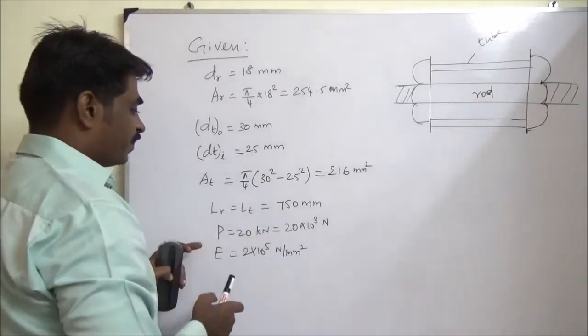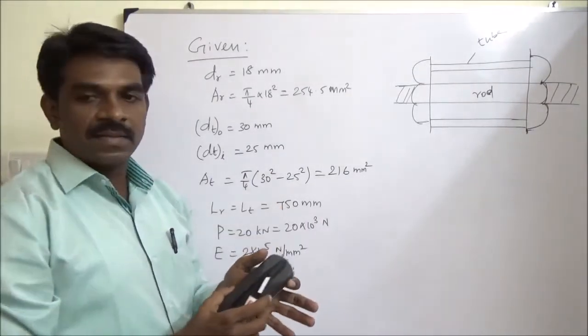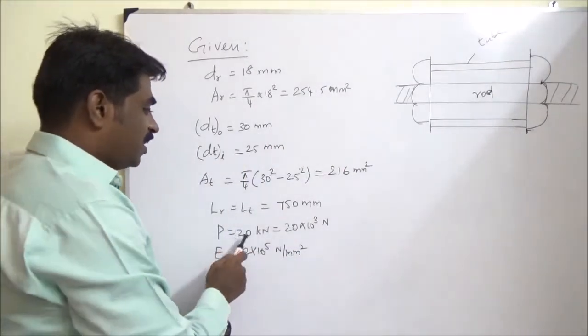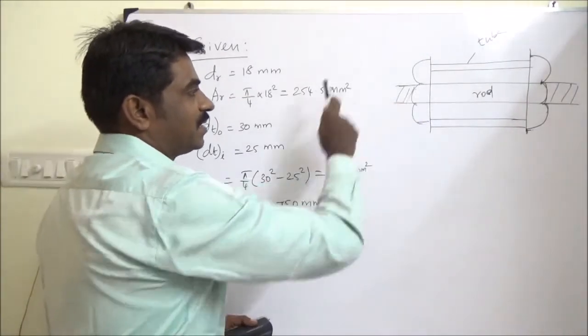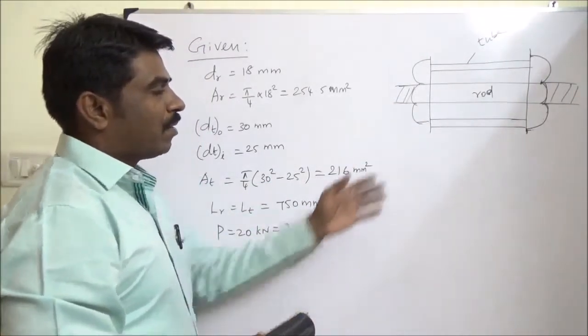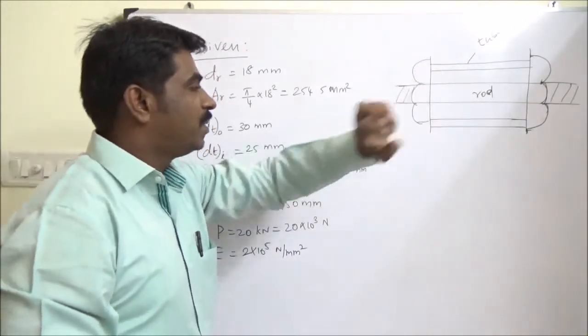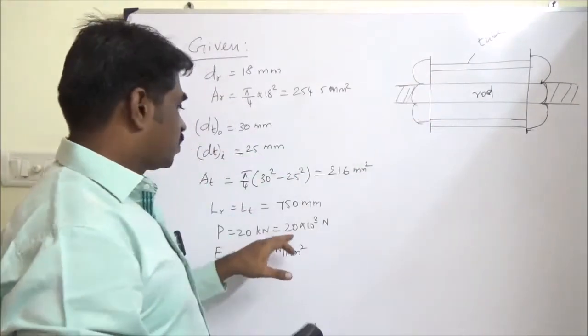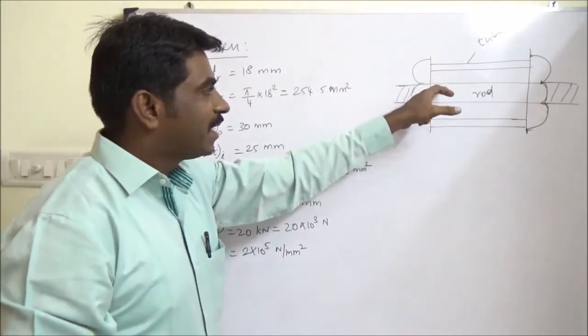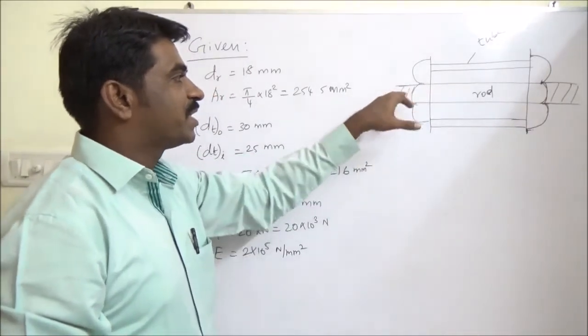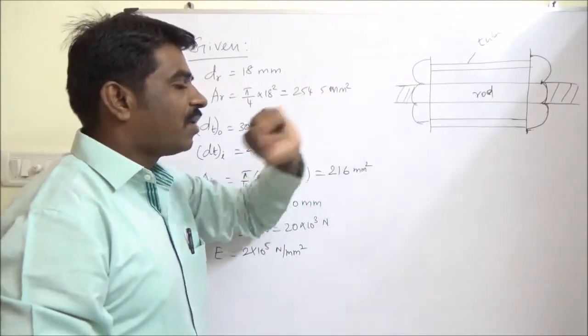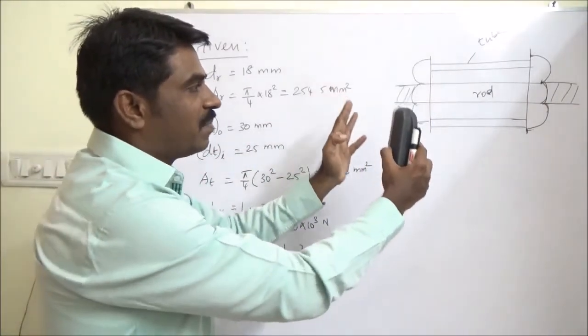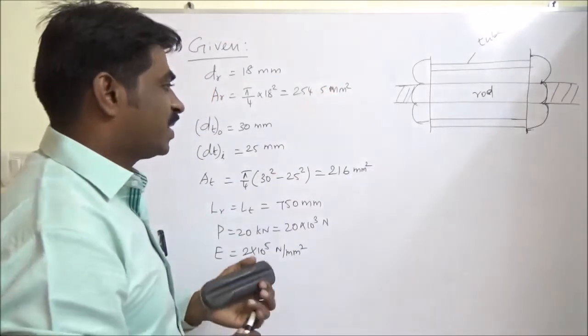So both are equal and this question is having two parts. First part: when 20 kilo Newton is subjected on the tube, a compressive load of 20 kilo Newton is applied here and the equal amount of tensile force is acting on the rod. So the forces are equal in order to keep the body in equilibrium.